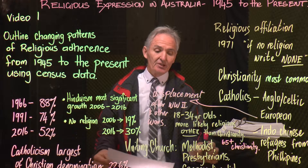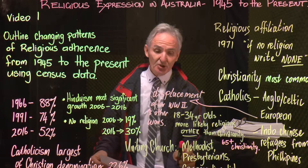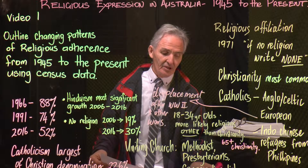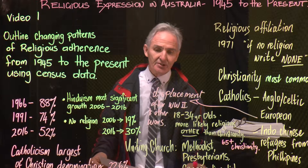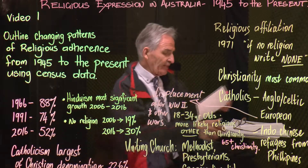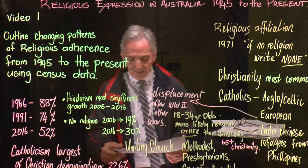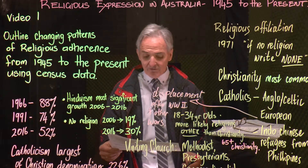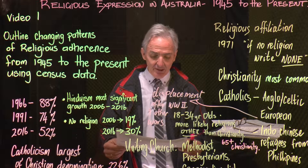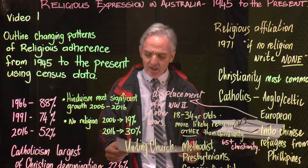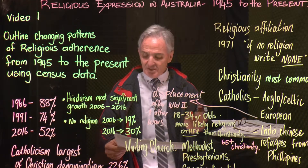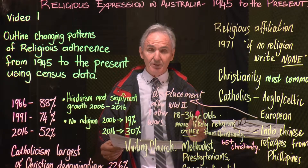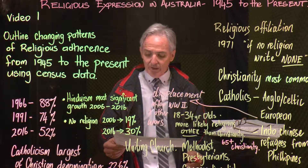You also need to know about the Uniting Church, which consists of the Methodist, Presbyterian, and Congregationalist denominations. Our census data tells us that we're a religiously diverse nation, with Christianity remaining the most common at 52%, and Islam at 2.6% as the next biggest religion, then Buddhism at 2.4%.